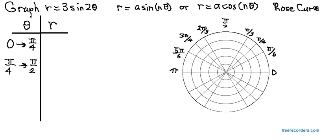N tells you the number of petals. If n is odd, the rose has n petals.